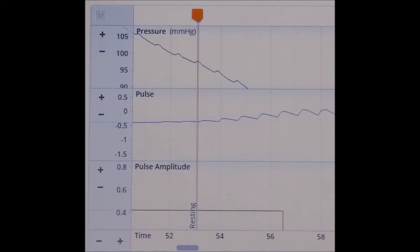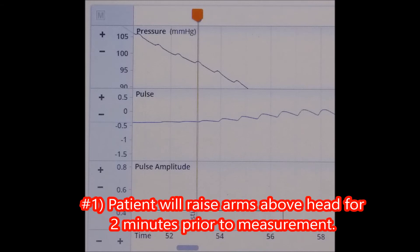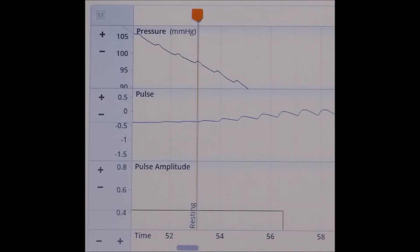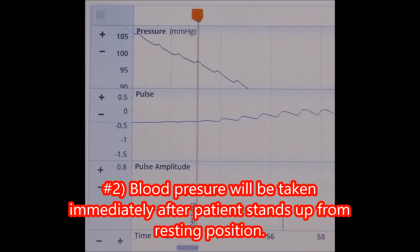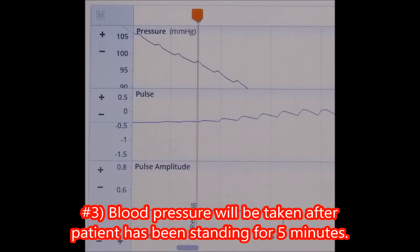We will use this same procedure to determine the patient's systolic blood pressure under three separate other conditions. Condition number one: The patient will raise their arms above their head for two minutes continuously prior to measurement. Condition number two: Blood pressure will be taken immediately after patient stands up from a resting position. And condition number three: Blood pressure will be taken after the patient has been standing for five minutes.